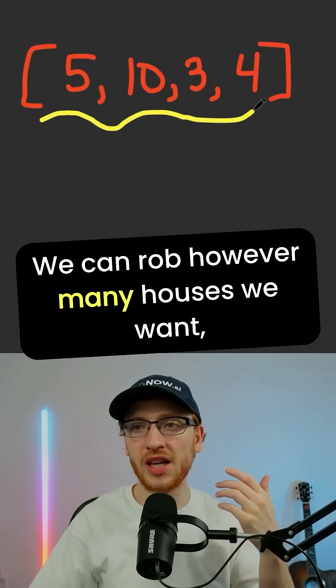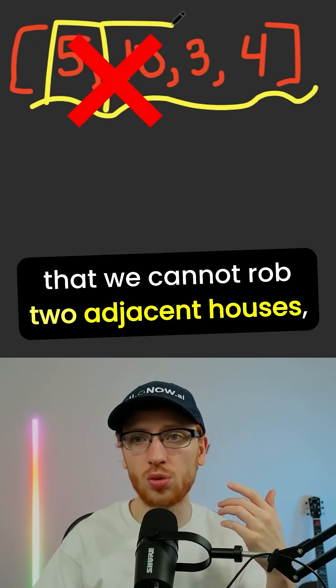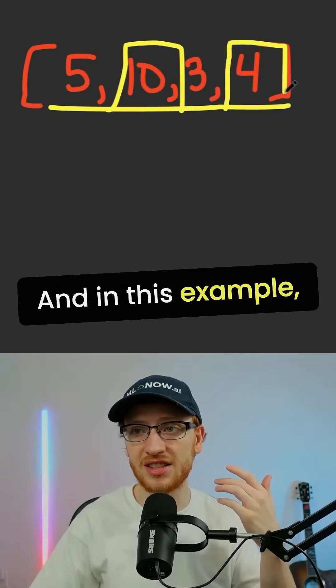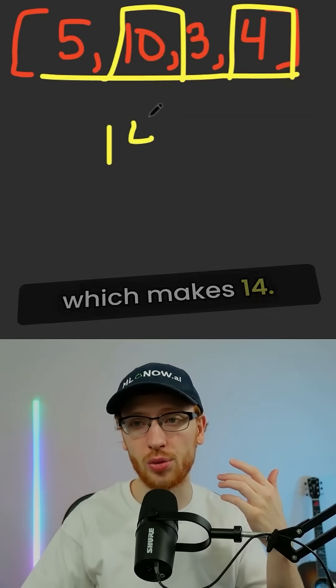We can rob however many houses we want, with the exception that we cannot rob two adjacent houses because that would trigger the police. And in this example, the answer is 10 and 4, which makes 14.